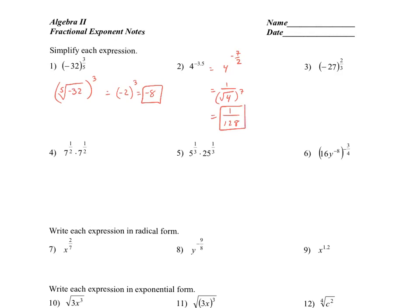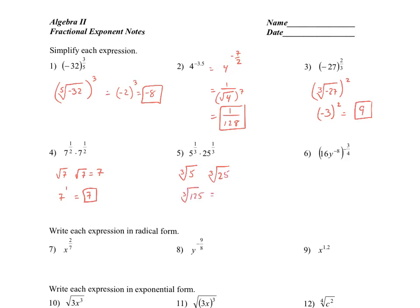Number three, we're going to take the cube root of negative 27 and raise that to the second power. The cube root of negative 27 is negative 3. When we square that quantity, we get positive 9 — because when you square a negative number, you get a positive number. Number four, we can rewrite this as the square root of 7 times the square root of 7, which is 7. Or, because they have the same base, we can keep the base and add the exponents — so it becomes 7 to the first, or 7. Number five, converting to radical form: the cube root of 5 times the cube root of 25 gives us the cube root of 125, which is 5.